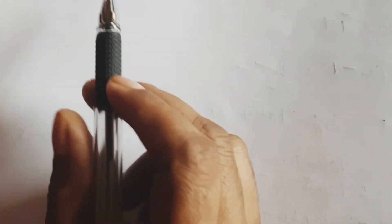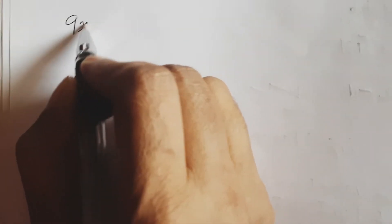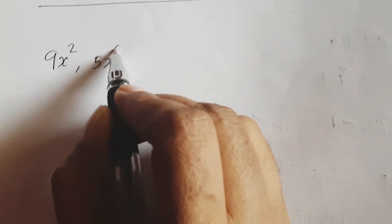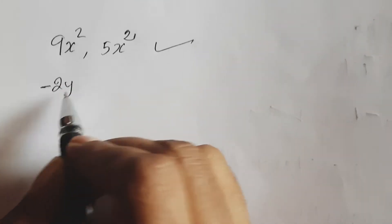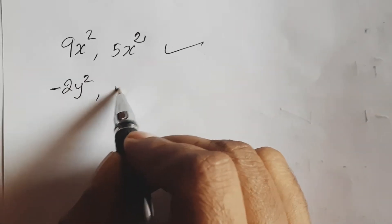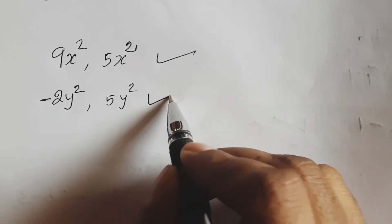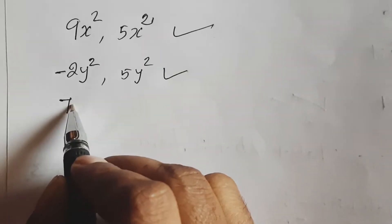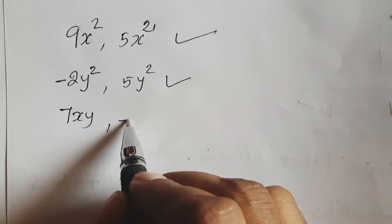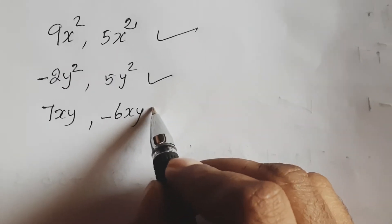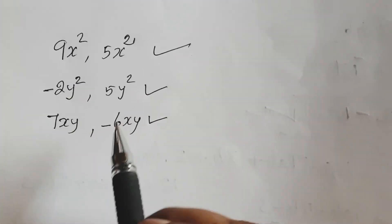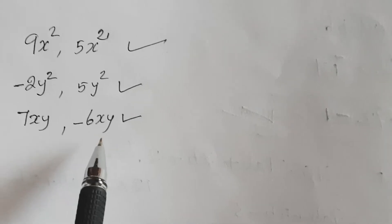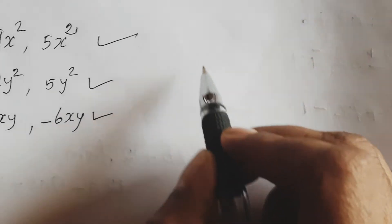Some examples of like terms: 9x square and 5x square — these are like terms. Minus 2y square, 5y square — these are also like terms. 7xy and minus 6xy — these are also like terms. We can add and subtract like terms.